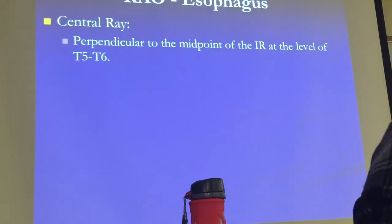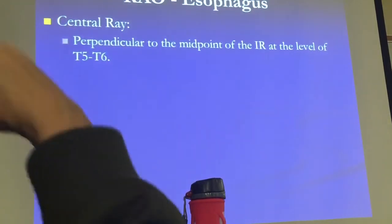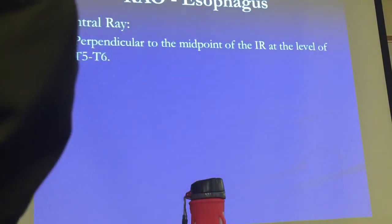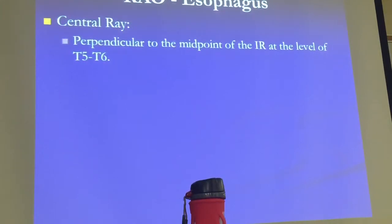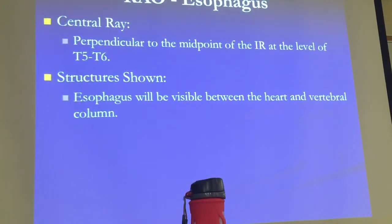The central ray is perpendicular to the midpoint of the image receptor, approximately at the level of T5 to T6. To find T5-T6: find T7 using the chest x-ray landmark, then go up an inch or so — depending on the patient's size. The structures shown: you will see the esophagus between the heart and the vertebral column. Sometimes if the heart is enlarged it can push the esophagus to the side, so take that into account.